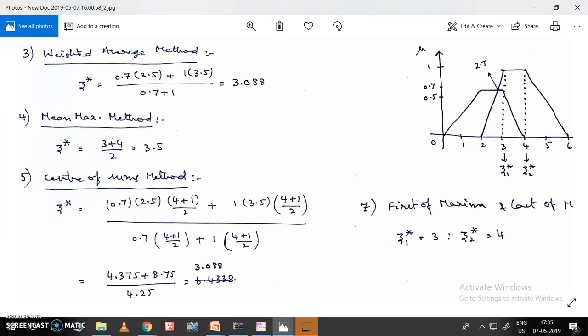For fuzzy set 2, the base is from 2 to 6 (4 points), and the maximum value is from 3 to 4 (1 point), so it's also (4+1)/2. Finally, the value is 3.088.